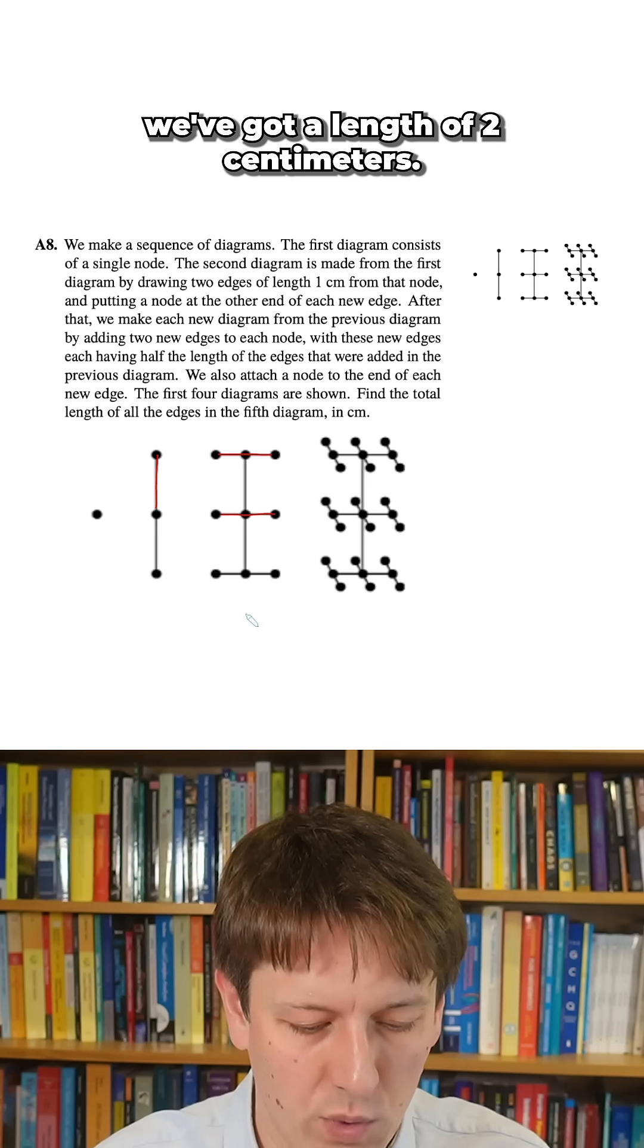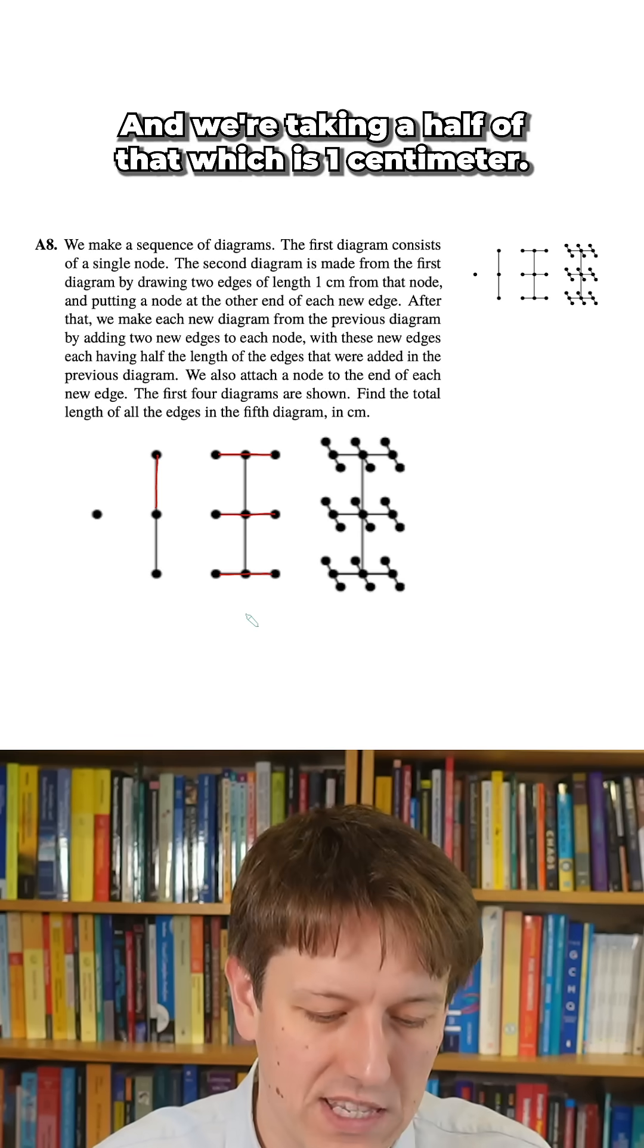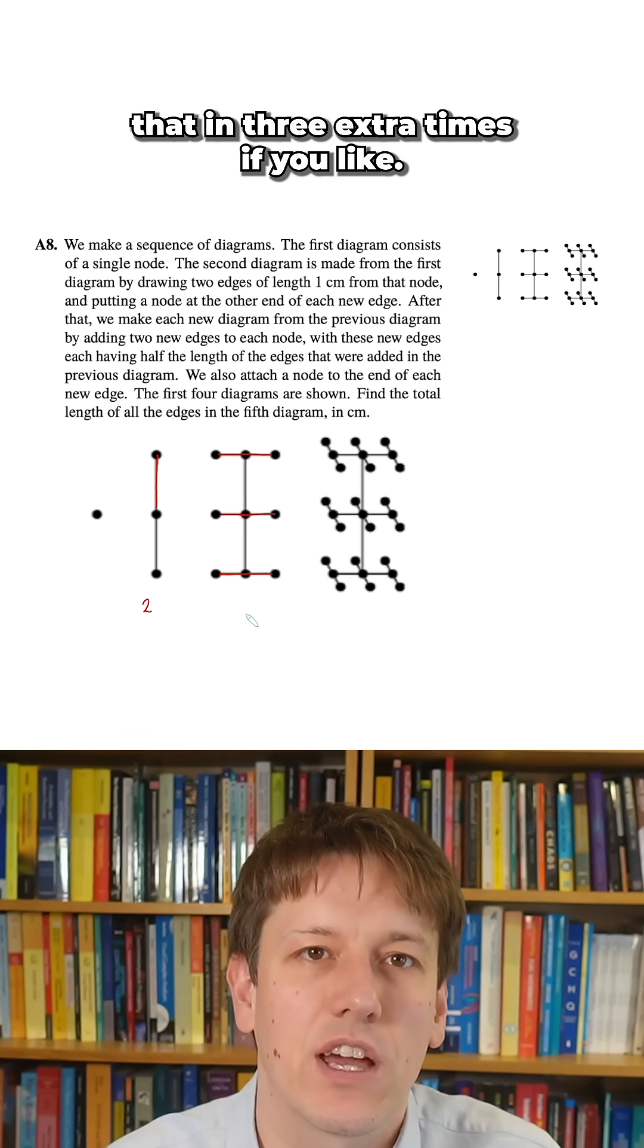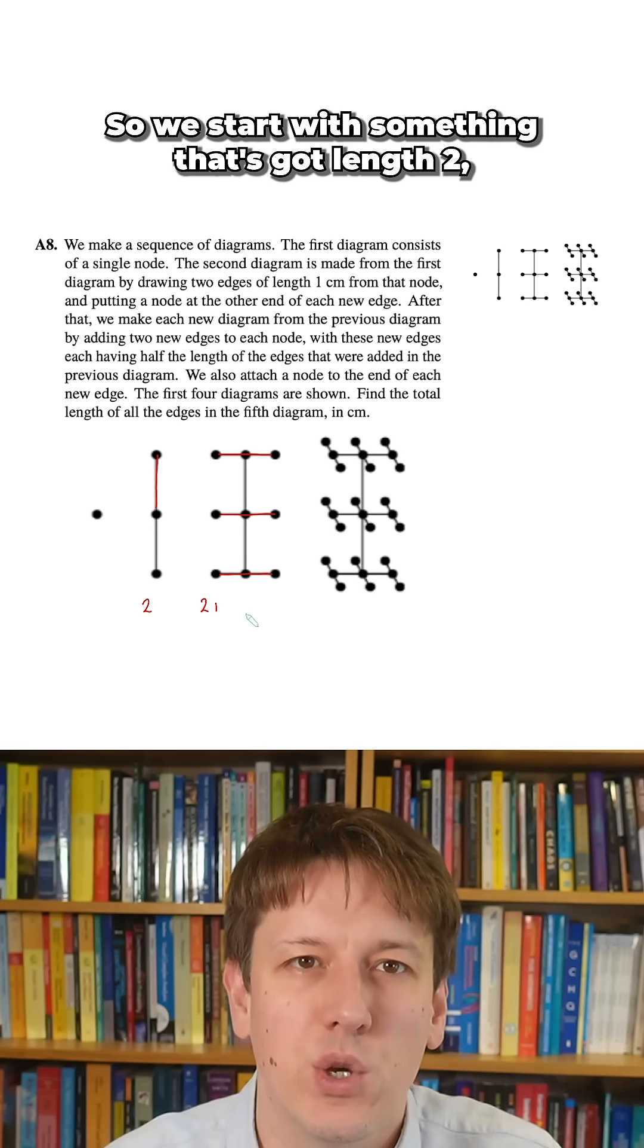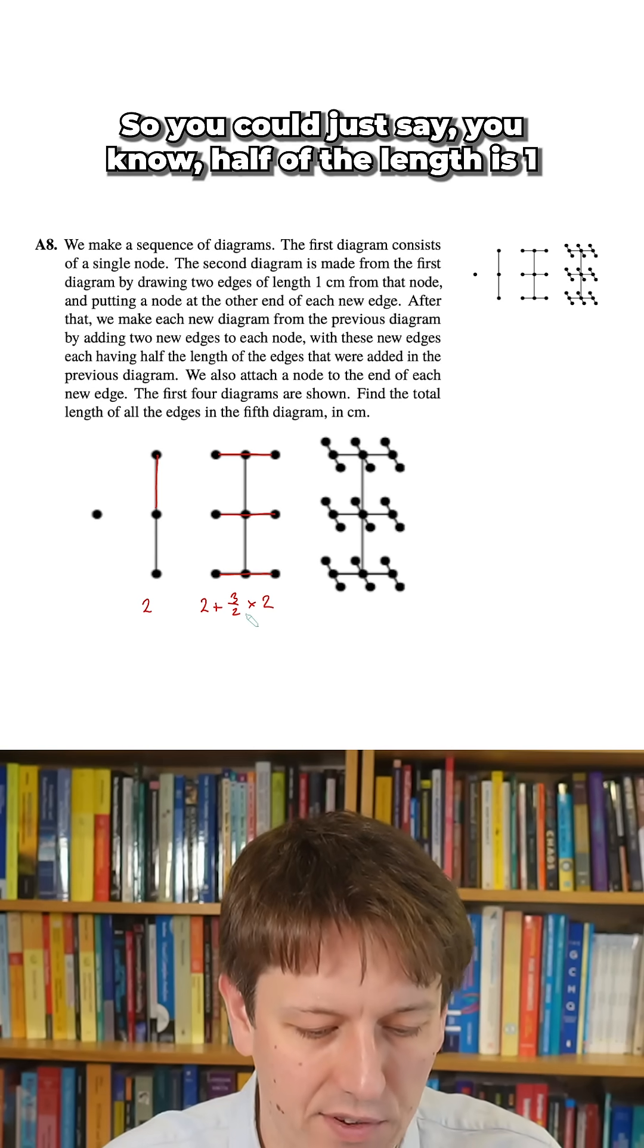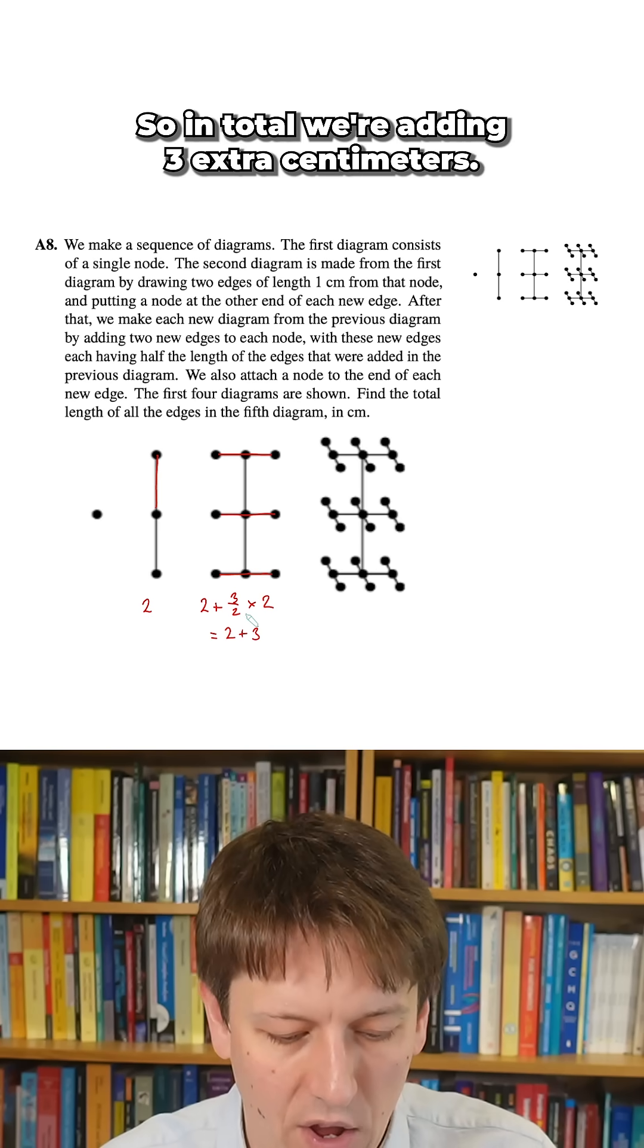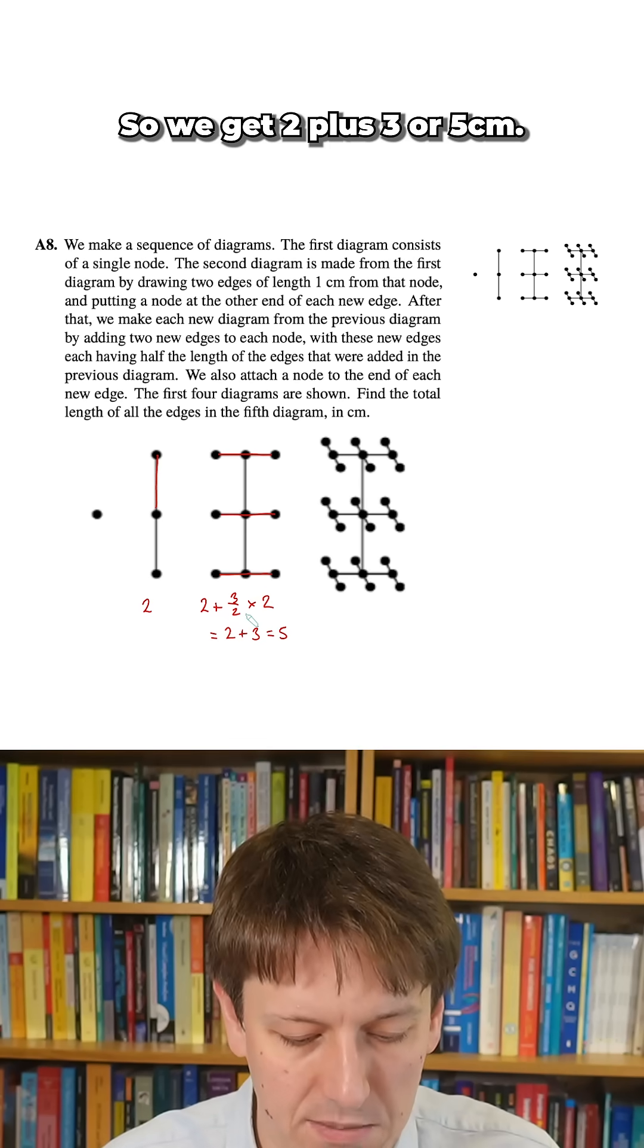In the second diagram we've got a length of two centimeters and we're taking a half of that, which is one centimeter, adding that in three extra times. So we start with something that's got length two, and then we add to it three halves of that two. So half of the length is one, and I'm adding three of those, so in total we're adding three extra centimeters, so we get to two plus three or five centimeters.